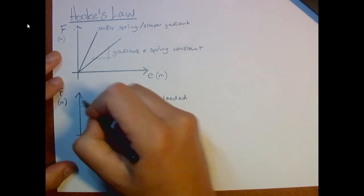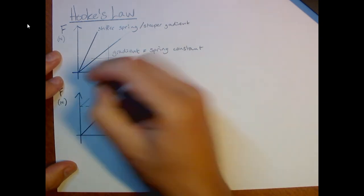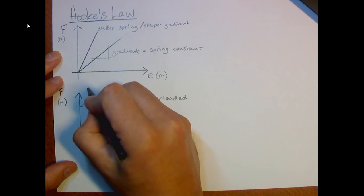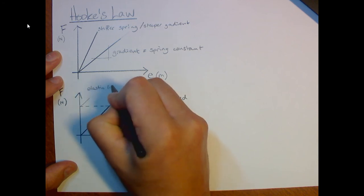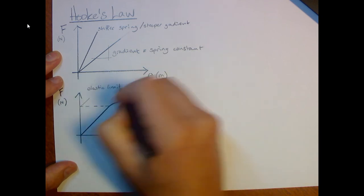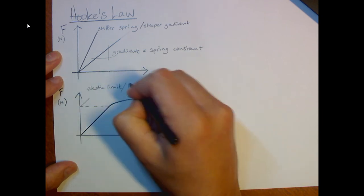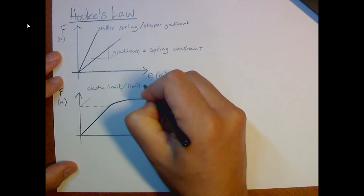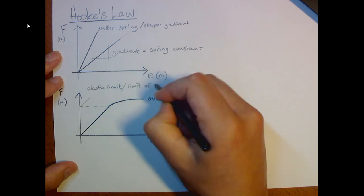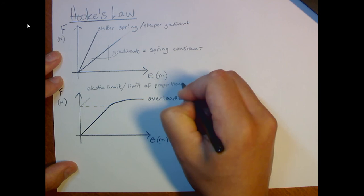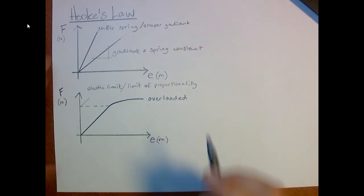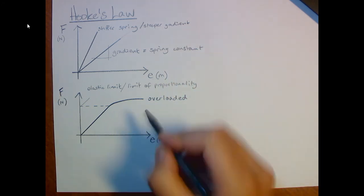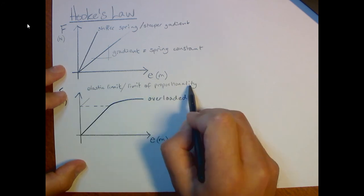So here's some things you need to know. We call this, sometimes it's known as the elastic limit. But it's also known as the limit of proportionality. And as you move on to the AQA scheme, the AQA course next year, you're going to need to know it as the limit of proportionality.